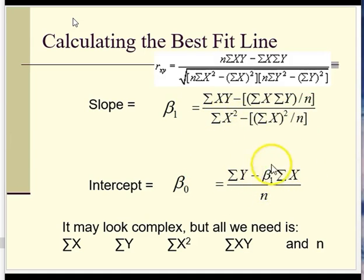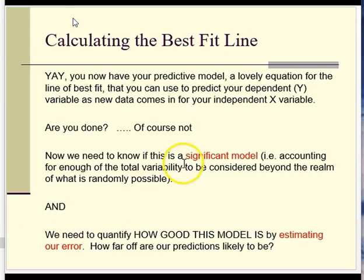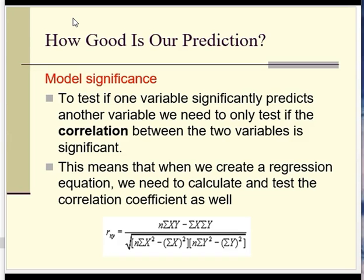The intercept is easy to identify because it's the only formula that asks for a beta value or coefficient. We also have to run a significance test to determine if this model — this coefficient multiplied by one of those variables — can account for enough of the total variability to be considered beyond what's randomly possible. We also need to figure out how much error is associated with the model. The significance test for whether you have a significant regression model is simply the correlation test: if your correlation between x and y is significant, then you have a significant model.